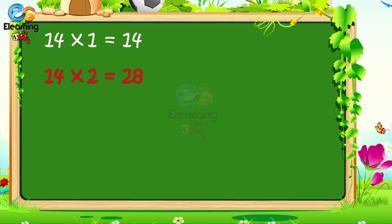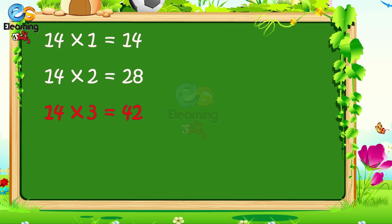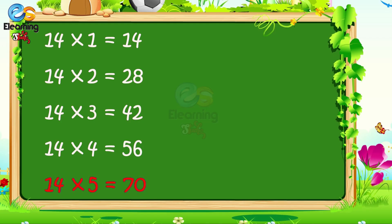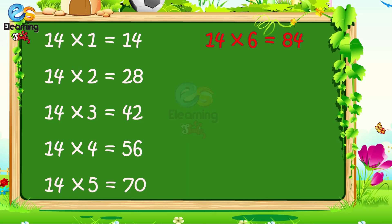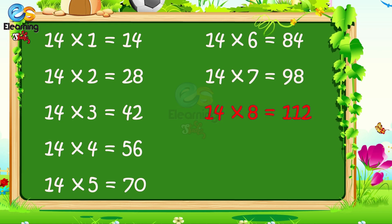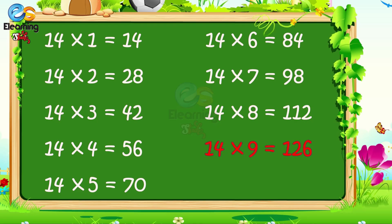14-1's are 14. 14-2's are 28. 14-3's are 42. 14-4's are 56. 14-5's are 70. 14-6's are 84. 14-7's are 98. 14-8's are 112. 14-9's are 126. 14-10's are 140.